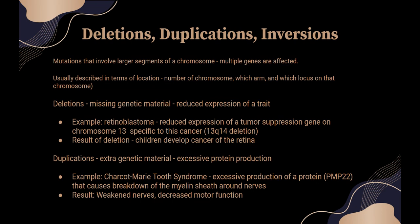A deletion means missing genetic material, leading to reduced expression of a trait. Many traits are governed by the expression of several genes working together. Duplications mean extra genetic material, leading to excessive protein production. The example here is Charcot-Marie-Tooth syndrome, which leads to excessive production of the protein PMP22, causing breakdown of the myelin sheath around the nerves. The result is weakened nerves and decreased motor function. So too much or too little can lead to important functions not being done or functions that need to be limited having an excessive effect.